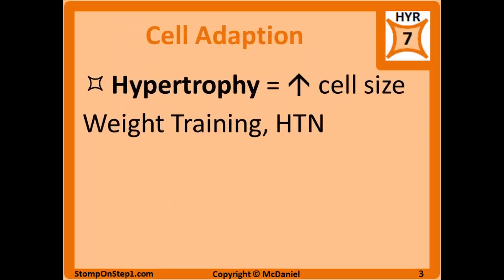Hypertrophy is going to be an increase in cell size, which usually is accompanied by an increase in the overall size of the organ because most of the cells in the organ increase in size. Examples would include muscles getting bigger due to weight training or the heart wall thickening due to having to work harder in a patient with hypertension.